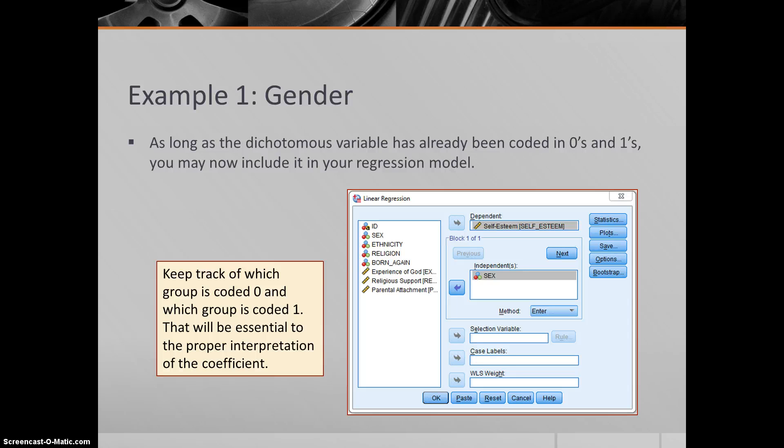As long as the dichotomous variable has already been coded with zeros and ones, you can put that into your regression model. This is just a straight-up multiple regression dialog box, dialog window. We have sex as our independent variable, we have self-esteem as our dependent variable. We want to keep in mind what's zero and what's one - that females are zero, males are one - because that's going to be essential to properly interpreting our coefficient.